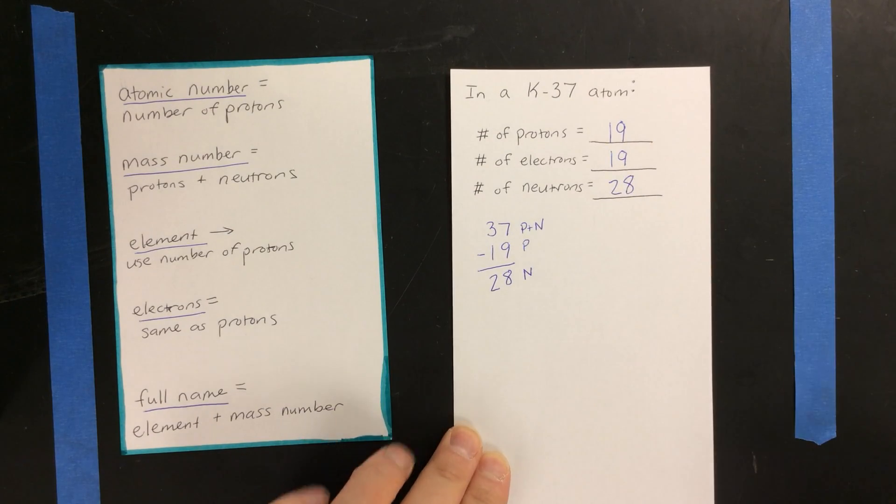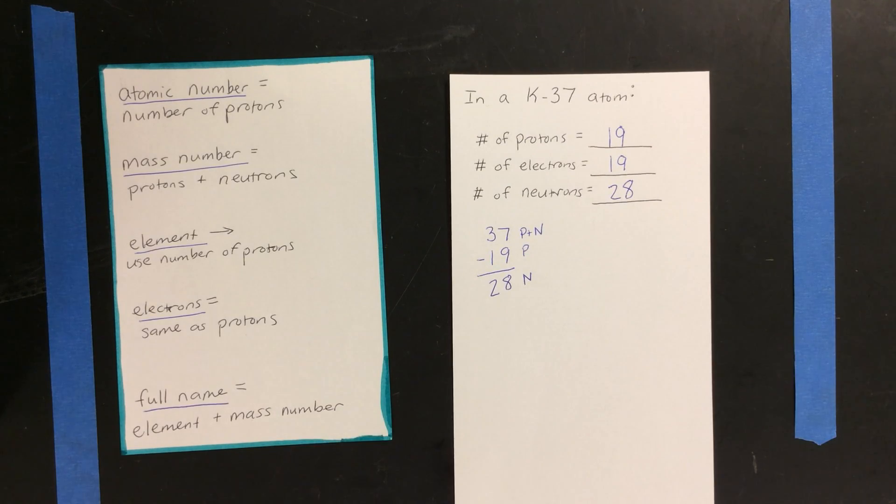So this is how you would figure out the number of protons, electrons, and neutrons in an atom, if you are given the full name of the atom.